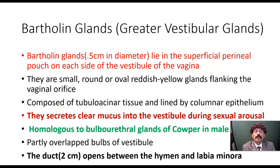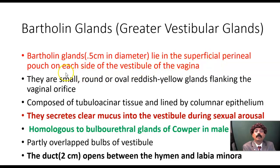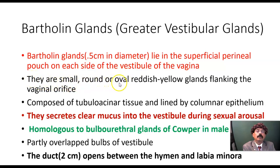Hello, my name is Dr. Divan S. Raja. Today I will discuss the Bartholin glands, also called greater vestibular glands. These are glands located in the superficial perineal pouch, about 0.5 centimeter in diameter, on each side of the vestibule of the vagina. The vestibule is the space between the two labia minora, one on each side.